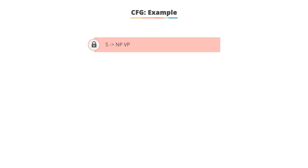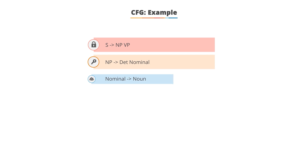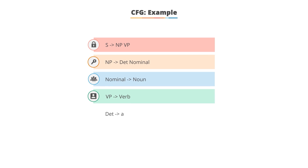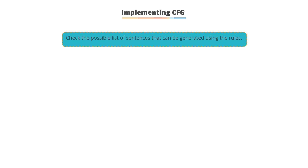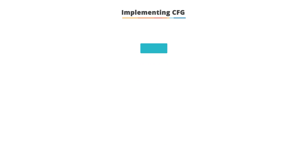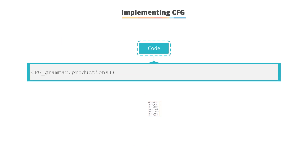In context-free grammar, a sentence can be represented as a noun phrase followed by a verb phrase. A noun phrase can be a determiner plus nominal; a nominal can be a noun; VP represents the verb phrase; 'a' is a determiner, 'flight' is a noun. Given certain rules, sentences are generated: a sentence has a noun phrase followed by a verb phrase; a verb phrase is a verb followed by a noun; verbs can be 'Saul' or 'Met'; noun phrases can be 'John' or 'Jim'; a noun can be 'dog' or 'cat'. Use the JOIN function and production() function to check grammar rules.